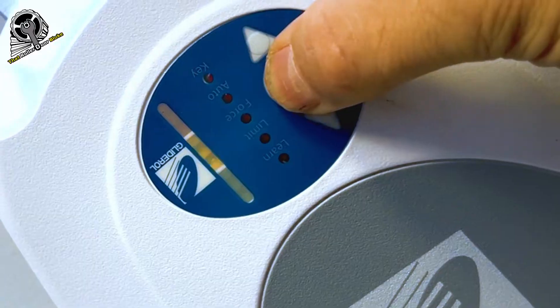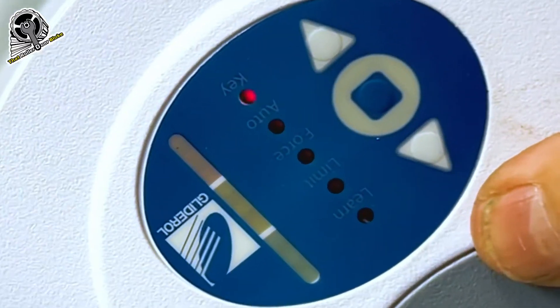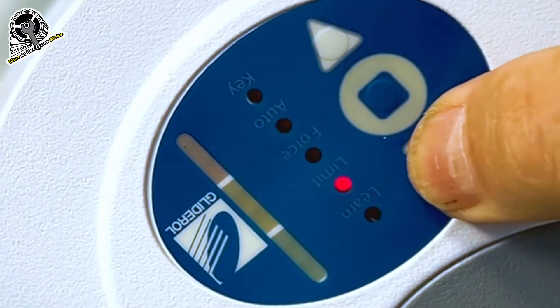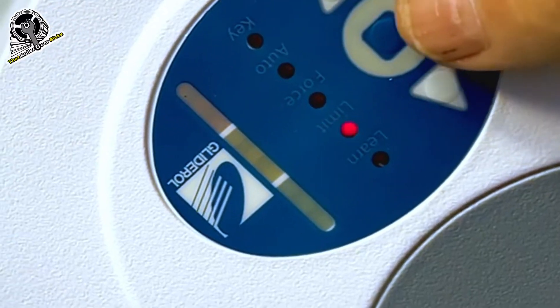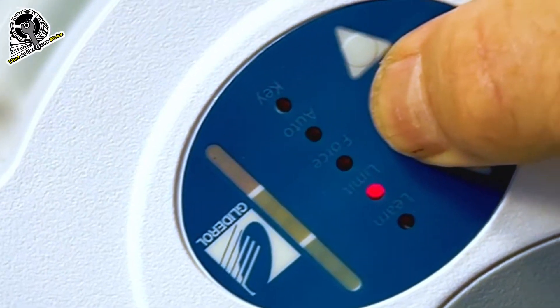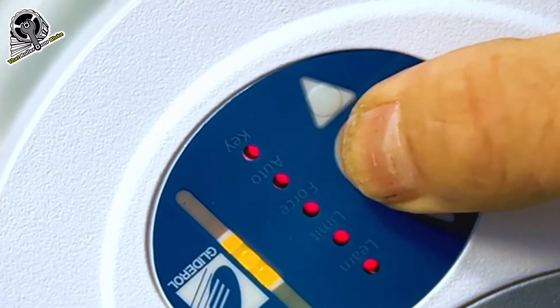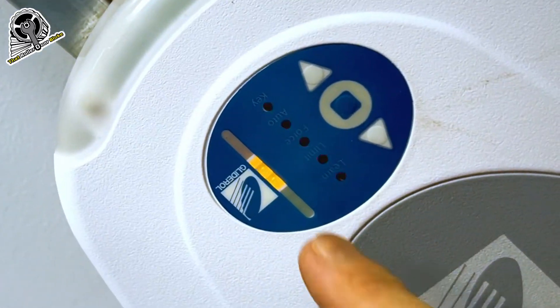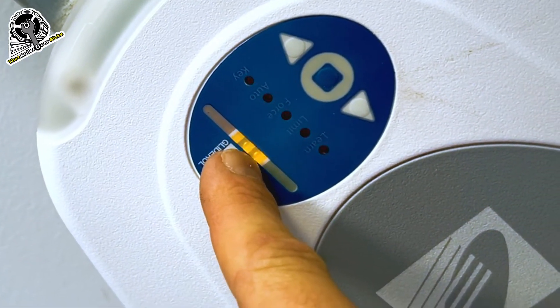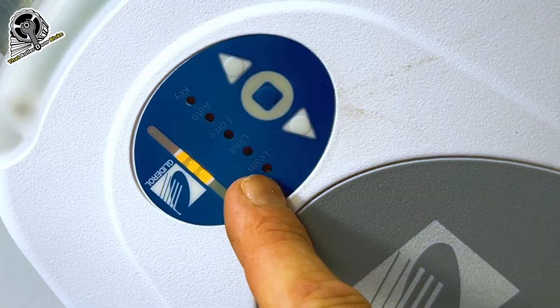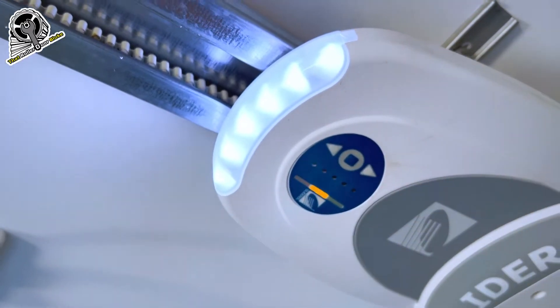So hold the middle button. Within a few seconds, scroll up to the limit button. Press the center button. Now we're in limit learning mode. You've got the center orange light lit up and all the red LEDs lit up.